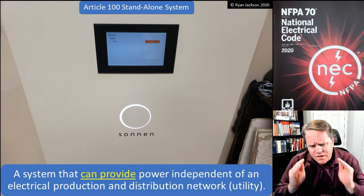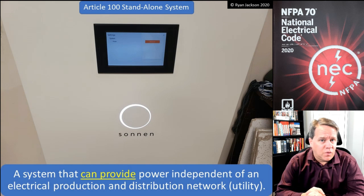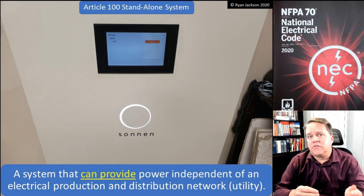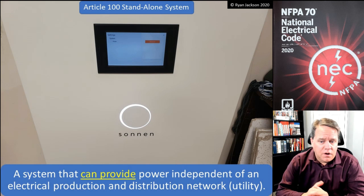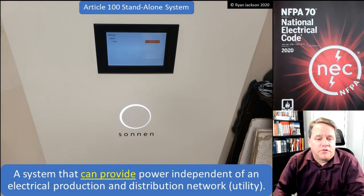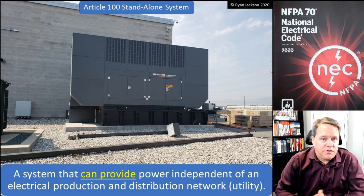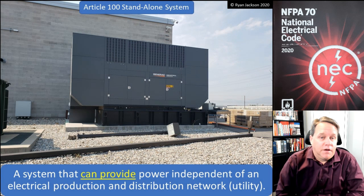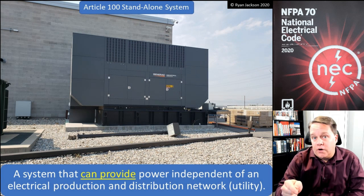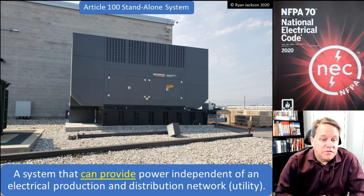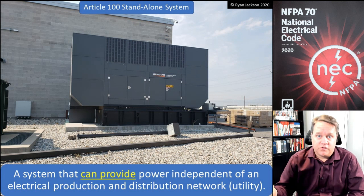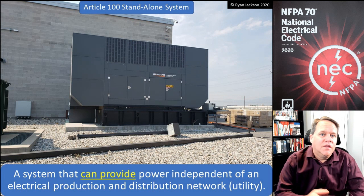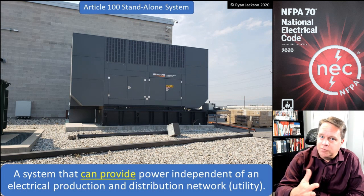The standalone system definition was tweaked in the 2020 version of the NEC. It says it's a system that can provide power independent of an electrical production and distribution network, which would be a utility. Well, any generator meets that definition — can a generator provide power that's independent of a utility? Of course it doesn't need the utility to function. So the definition of a standalone system isn't perfect.